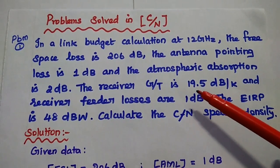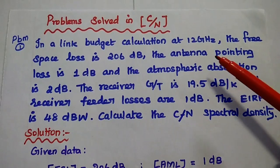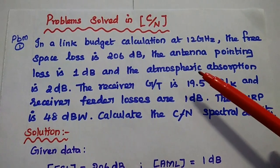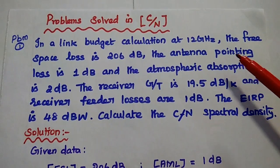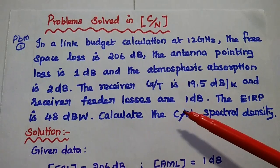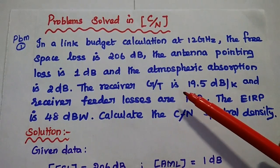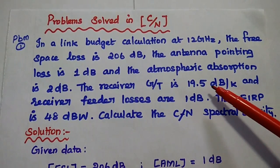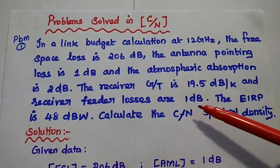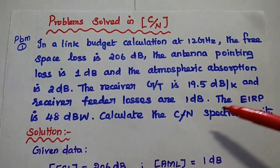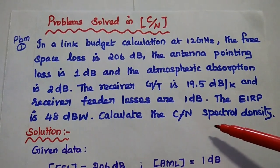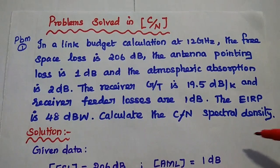The first problem: in a link budget calculation at 12 GHz, the free space loss is 206 dB, the antenna pointing loss is 1 dB, and atmospheric absorption is 2 dB. The receiver G/T ratio is 19.5 dB/K and the receiver feeder loss is 1 dB. The EIRP value is 48 dB Watt. Calculate the carrier-to-noise ratio spectral density.